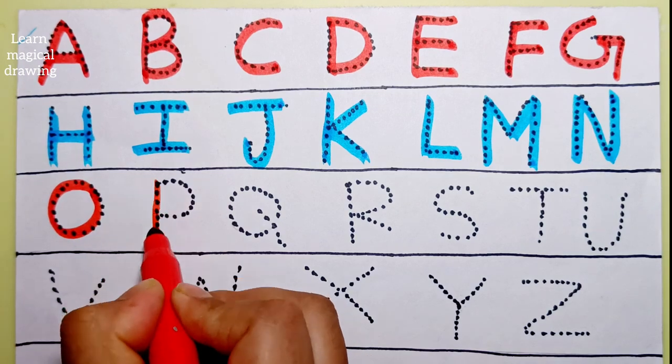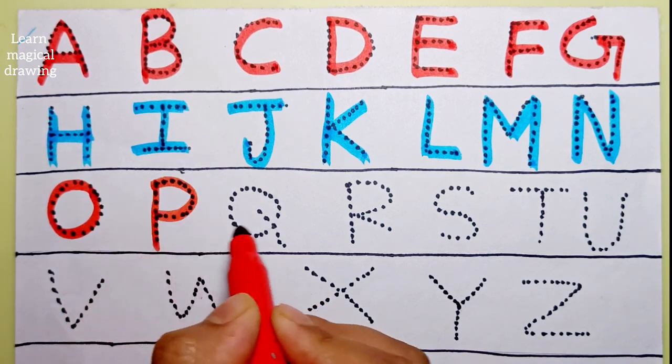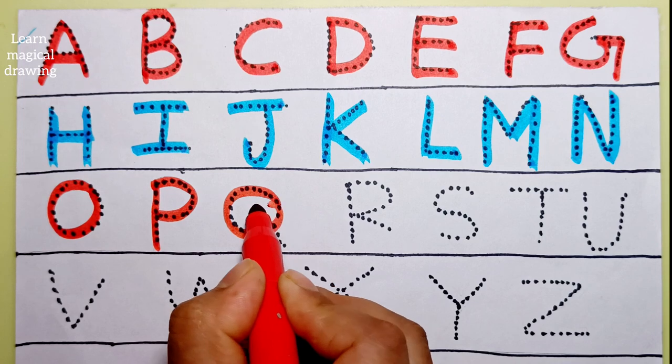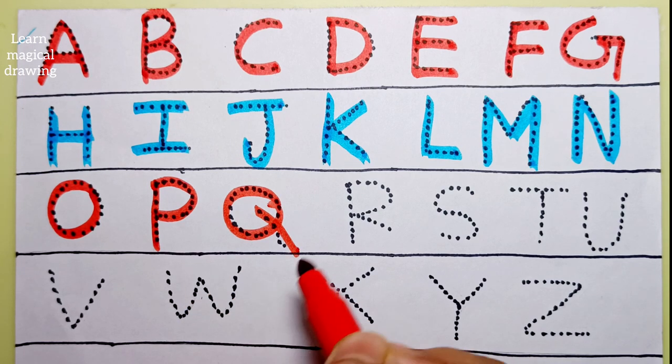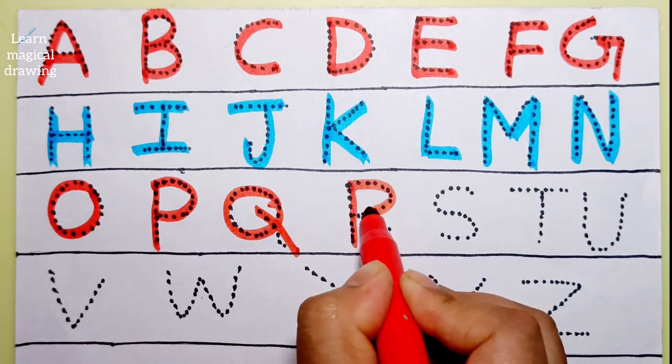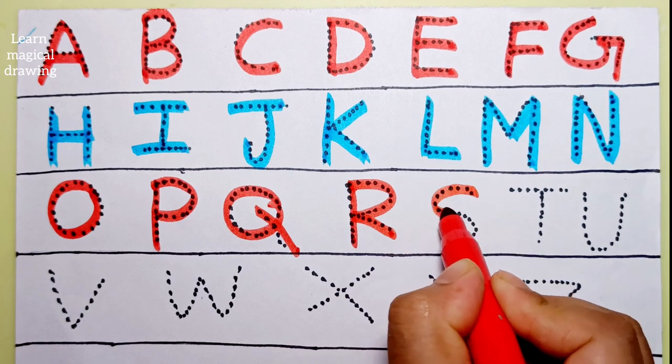O. O for octopus. P. P for parrot. Q. Q for question mark. R. R for rabbit.